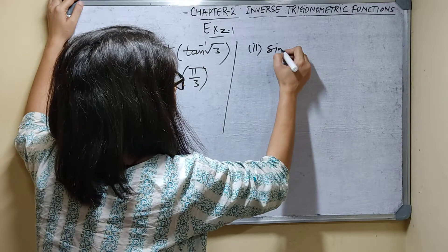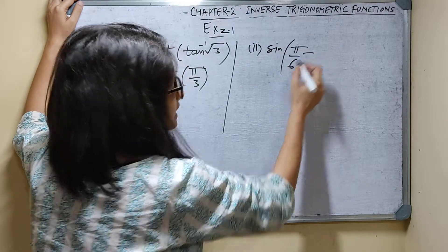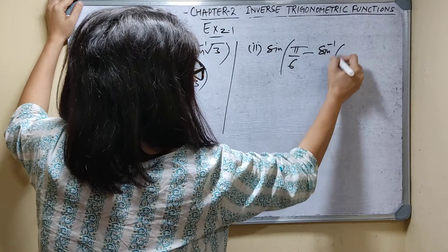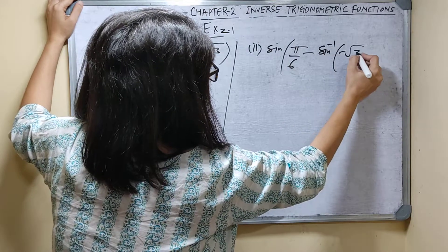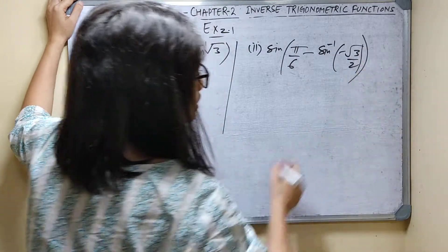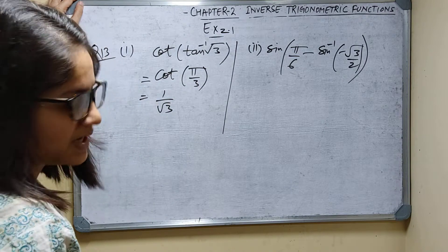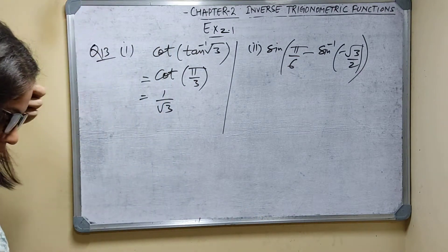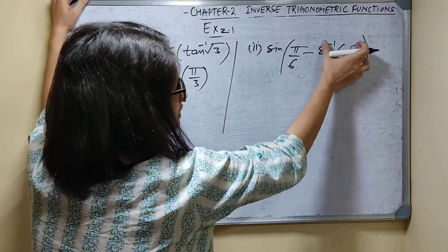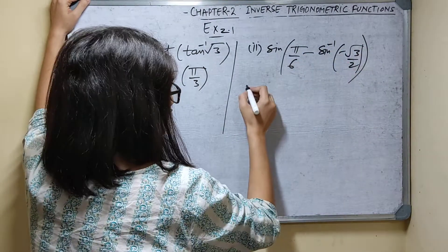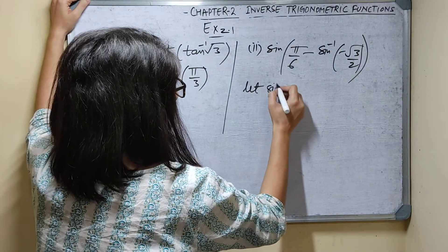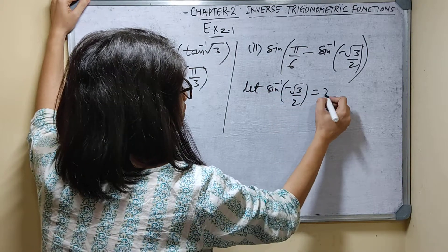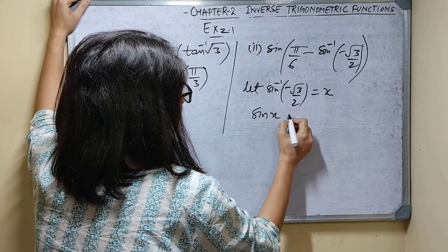Second part: evaluate sine of (pi by 6 minus sin inverse of minus root 3 by 2). Let sin inverse of minus root 3 by 2 equal x. So sin x equals minus root 3 by 2. And the range of sin inverse is between minus pi by 2 to pi by 2.